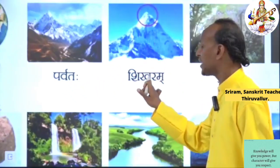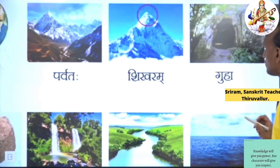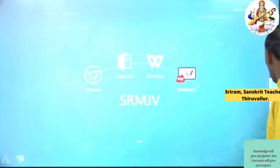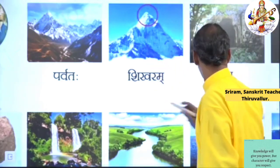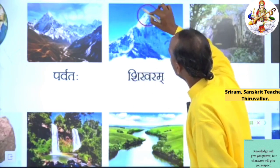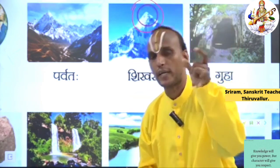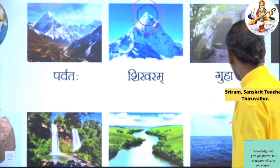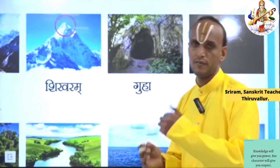Then the third one — Shikharam. What is meant by Shikharam? Shikharam means Peak — the top of the mountain. You can see it here, right? In Tamil we say Malai Ucchi. Then the next one — Guha. Guha means Cave. In Tamil we say Guhai.